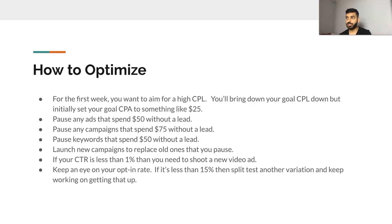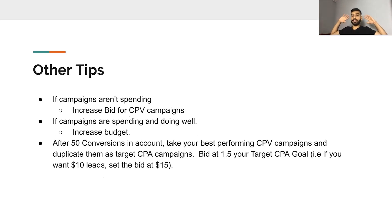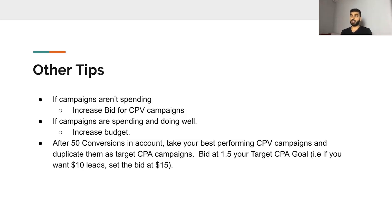If your CTR is less than 1%, shoot a new video ad. Keep an eye on your opt-in rate — if it's less than 15%, you need a new landing page. If it's higher, keep split testing landing pages but it's not urgent. If campaigns aren't spending, increase bids for CPV campaigns. If campaigns are spending and doing well, increase your budget. After you hit 50 conversions in your account, take your best performing CPV campaigns and duplicate them as Target CPA. Bid at 1.5x your target CPA goal — if you want $15 leads for Target CPA bidding, set your bid at $22. You can reduce the bid as time goes on.